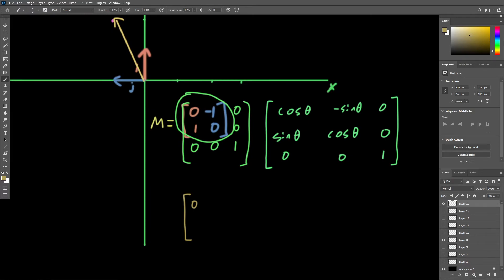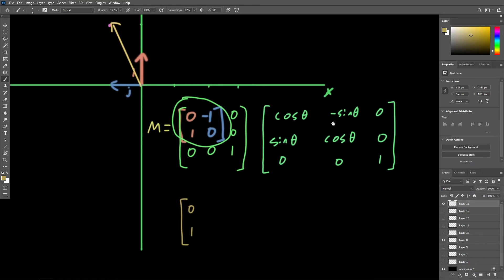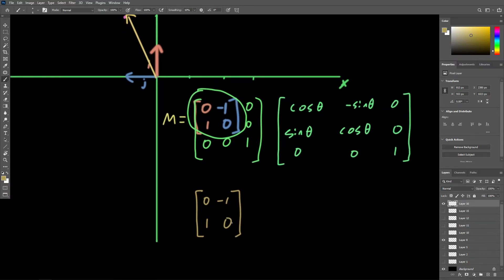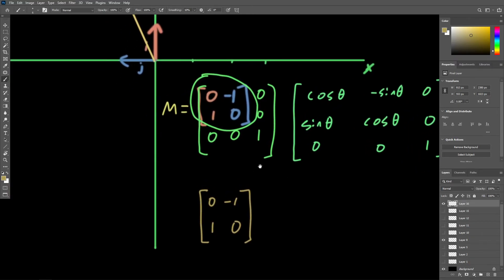What is the negative sine of 90 degrees? Well, negative one. And we already know that the cosine of 90 is zero. So there it is.